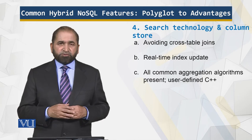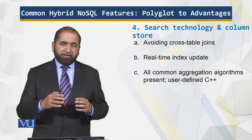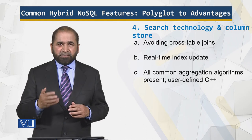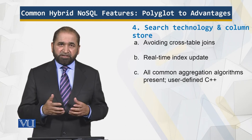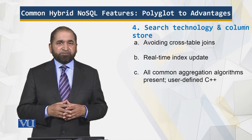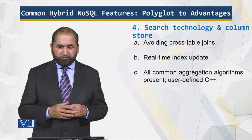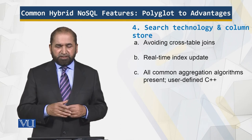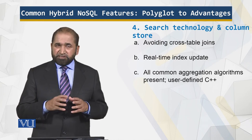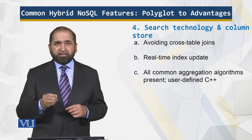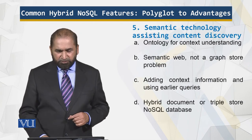Search technology and column store: as the document database in NoSQL is updated, the indexes are also updated in almost real-time. That makes the search very relevant and very fresh. The real-time index means all common aggregation algorithms are present. And if you are not satisfied, you can write your own aggregation algorithm in C++. That is the benefit of hybrid NoSQL.